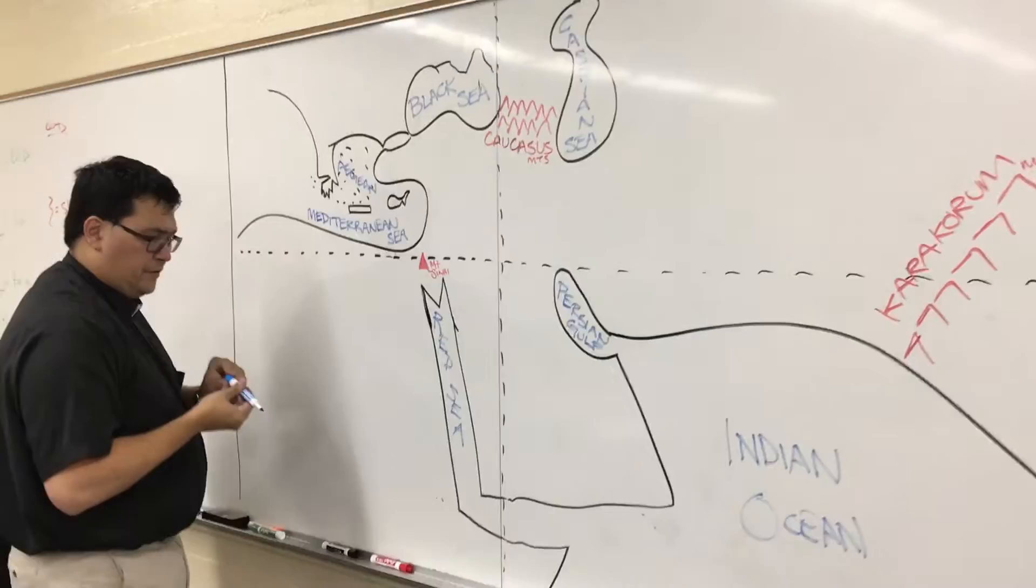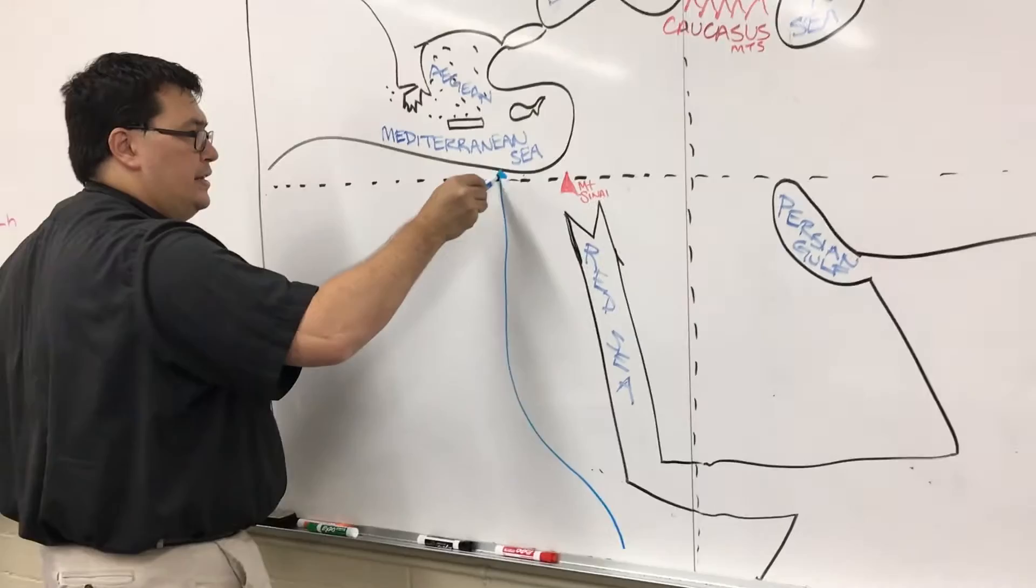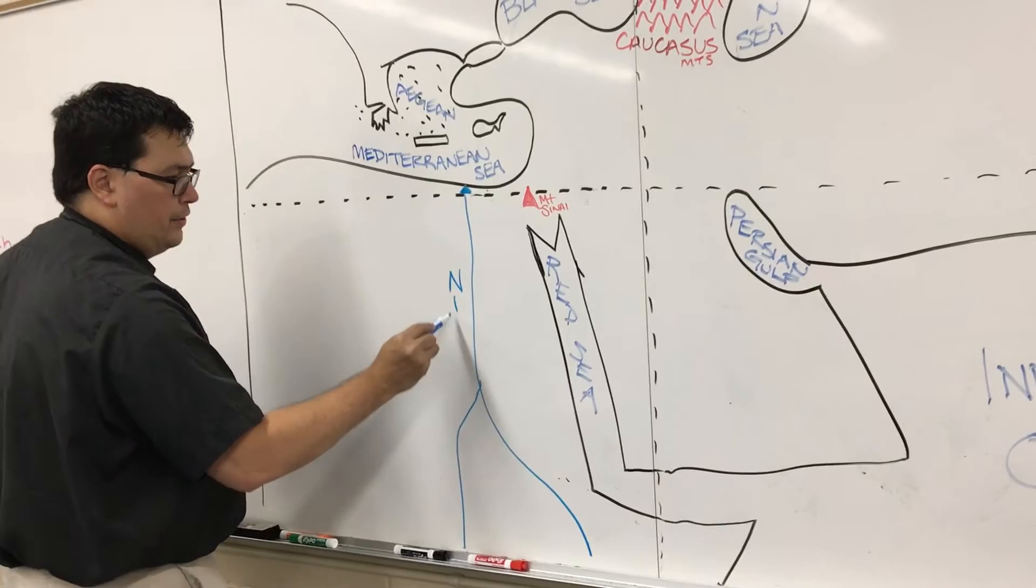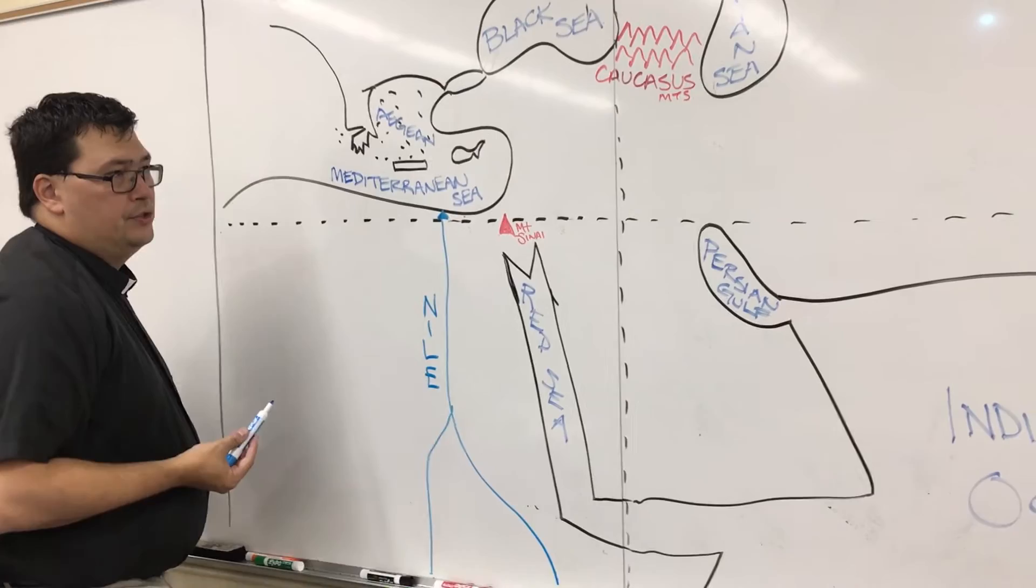Next, we're going to do rivers in this lighter color blue. The first one you already know about. It flows out of Africa, north into the Mediterranean, has these two branches. And this is the Nile River, N-I-L-E, Nile.